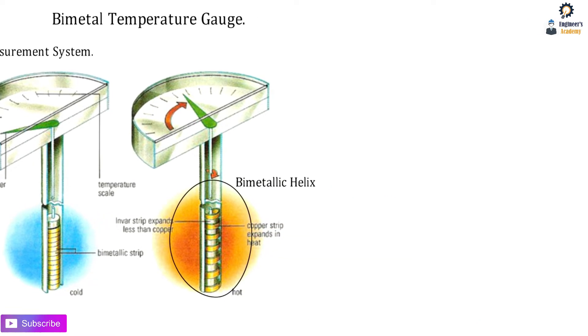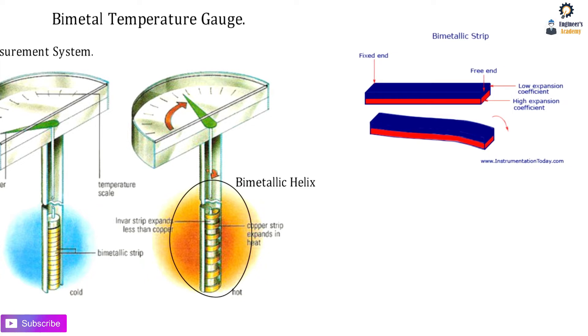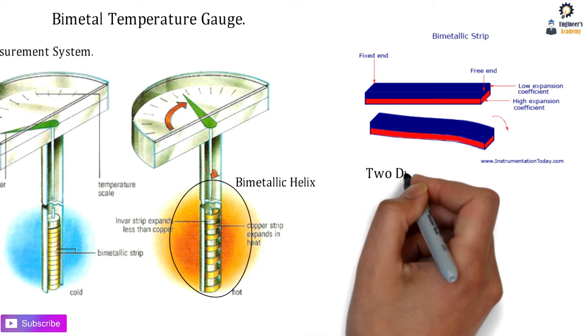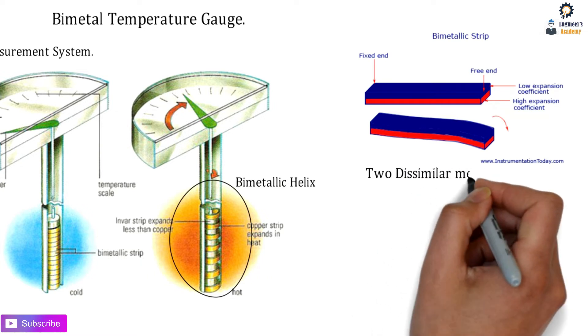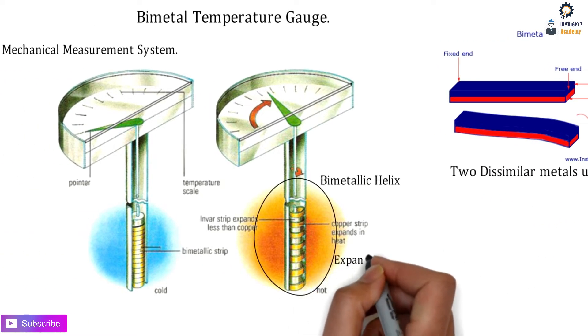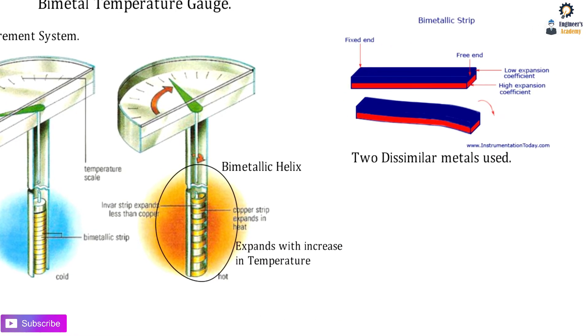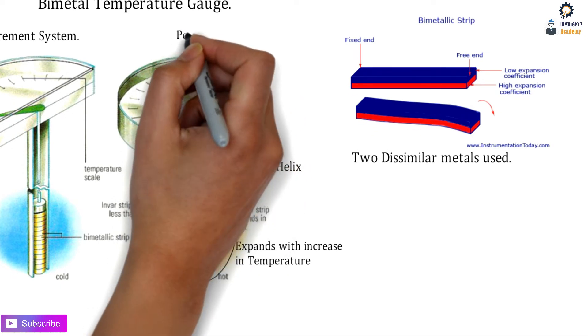In this bimetallic strip, two dissimilar metals are joined and fused together. The strip expands with the increase in temperature and deflects the pointer, which shows a reading on a scale.